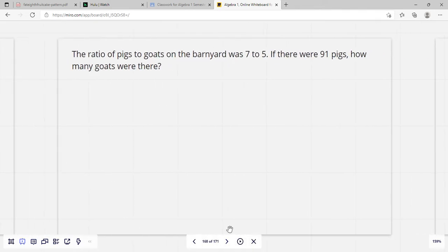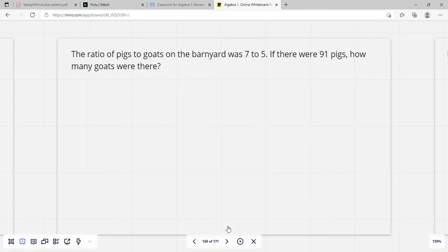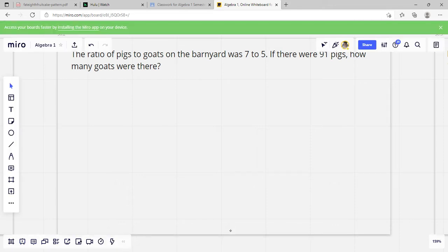We're going to try some word problems like this. The ratio of pigs to goats in the barnyard was 7 to 5. If there were 91 pigs, how many goats were there?